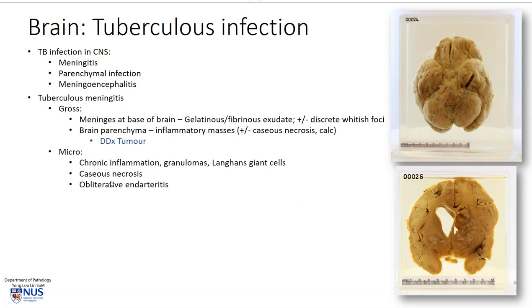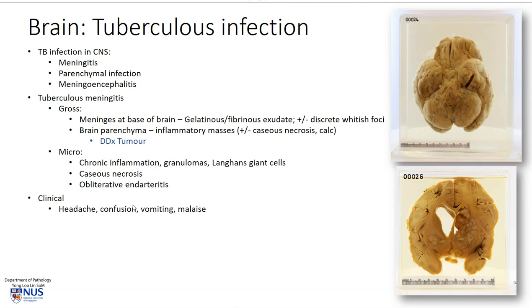Microscopically, we would see chronic inflammation in the subarachnoid space when there is TB meningitis. Usually there is a combination of chronic inflammation and perhaps even granulomas and Langhans giant cells. We would see similar things in the brain parenchyma with granulomatous inflammation, caseous necrosis, and sometimes even calcifications. The blood vessels running through the meninges in the subarachnoid space may also be affected and may be occluded from the inflammatory process, giving rise to obliterative endarteritis.